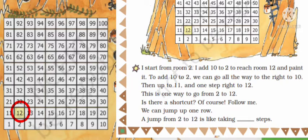So Kittu is now in room number 2 and he wants to go till room number 12. How can he go, children? Yes, he will walk through towards 10, then get into 11, and again move right to get into 12.